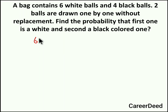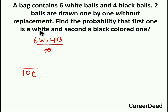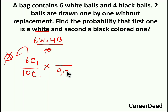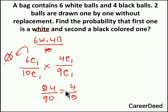Now with the same question — 6 white and 4 black balls — we draw 2 balls one by one without replacement. Without replacement means the first ball drawn is not returned. From 10 we select 1 white (6 ways); now 9 balls remain. From these 9 we select 1 black (4 ways). So 6×4 = 24, and 10×9 = 90. Therefore 24/90 = 4/15 is the probability of choosing first white and second black when drawing without replacement.